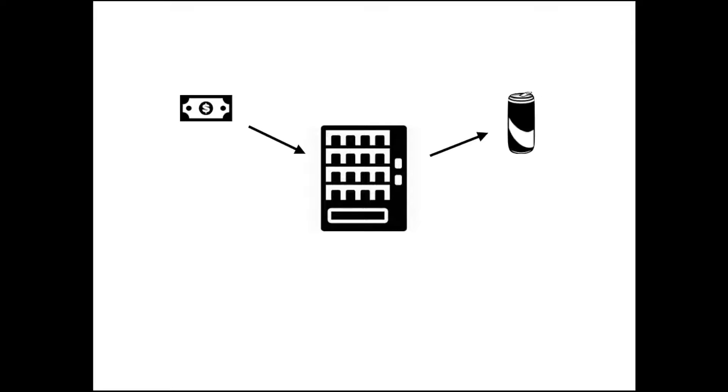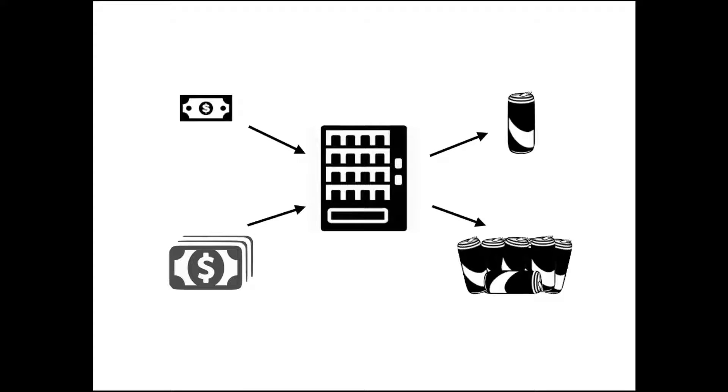Let me think of another real world example. Let's look at this vending machine which has just one product. The price is $1 for one can. If you think that money is the input signal, the vending machine is the system, and the output is the product, you can see that if you put $1, you get one product. And if you put $10, you can get 10 products and so on. Simply, this vending machine is a system that has the scaling property.